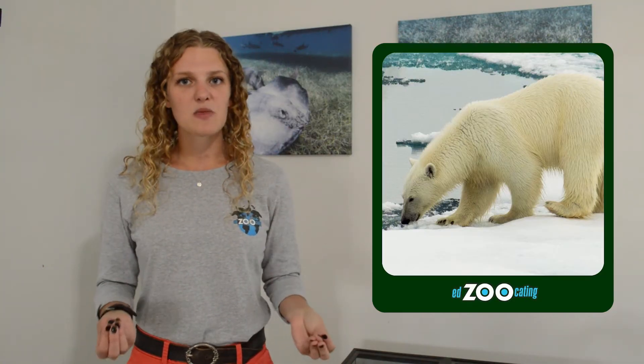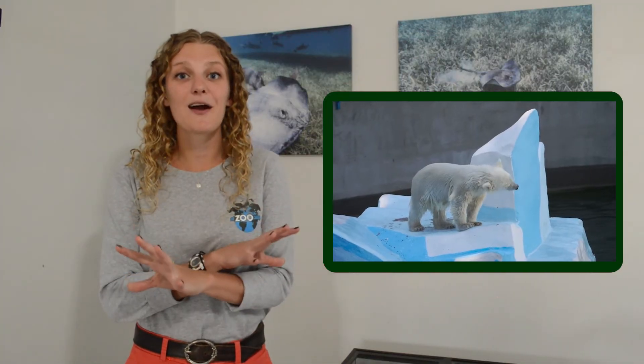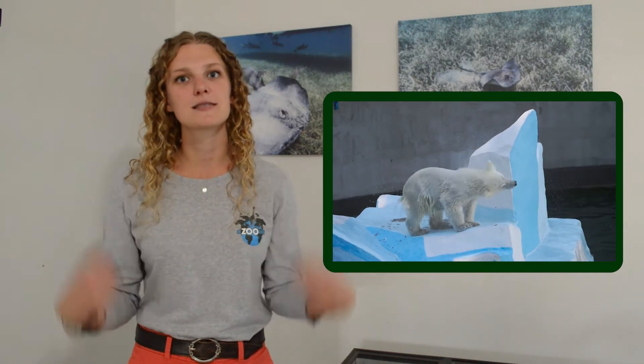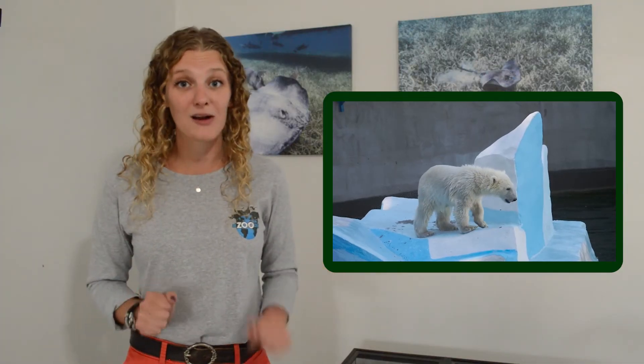Even though there aren't many plants in the tundra, the ones that exist are very well designed to survive. Now let's talk about some of the animals we might find there. The first animal that comes to mind is a polar bear. Polar bears are very well designed with lots of great adaptations. Of course, they have thick fur — like a coat — that keeps them warm and is special at wicking away water, so after swimming in the ocean hunting seals, their fur stays relatively dry.